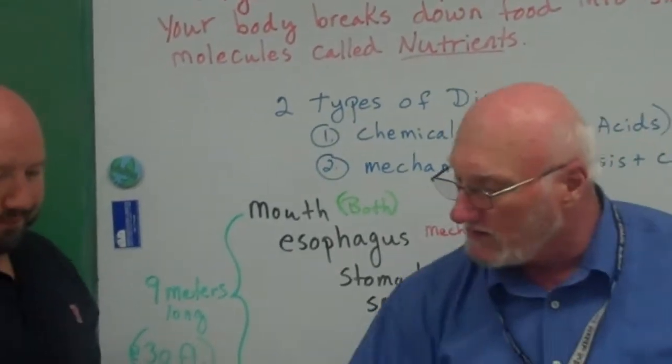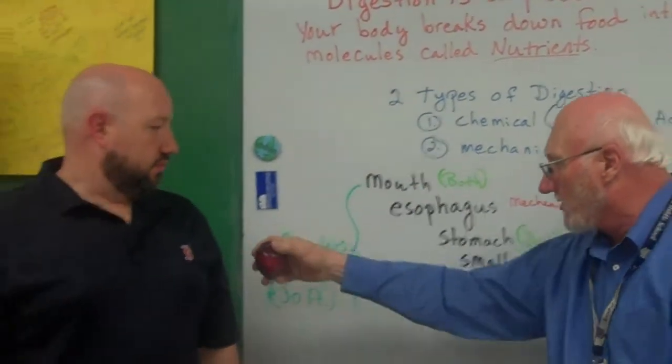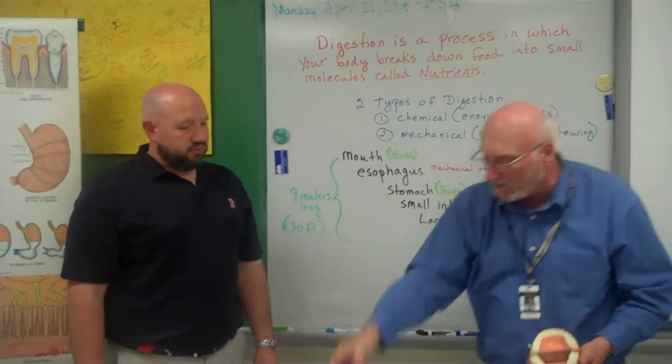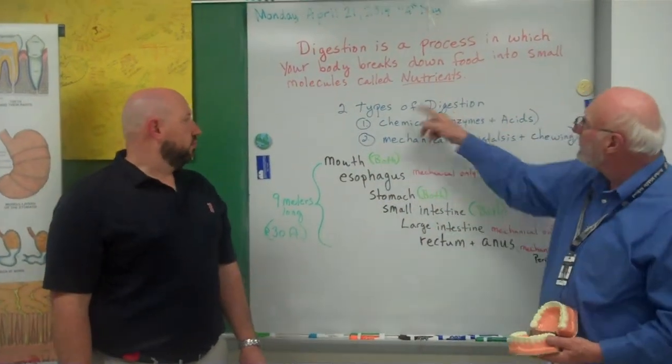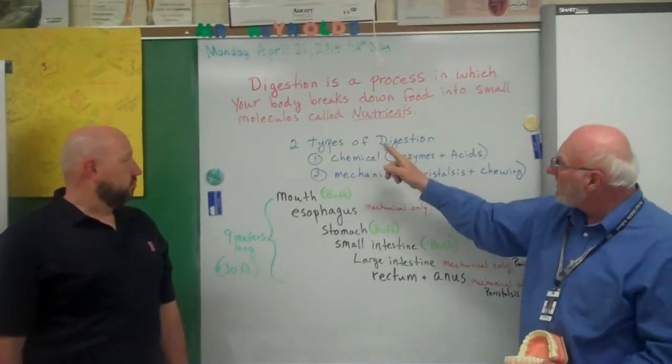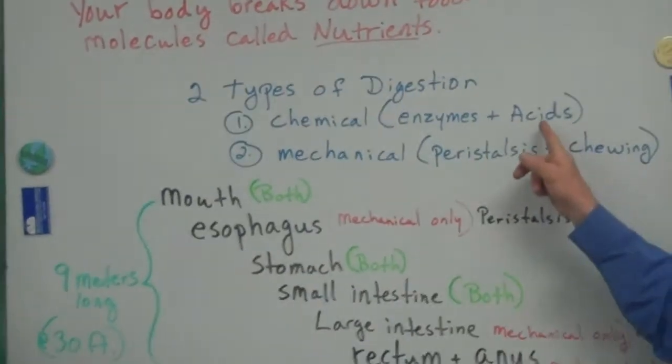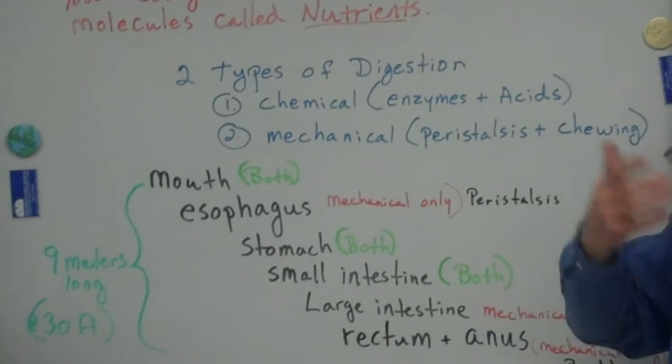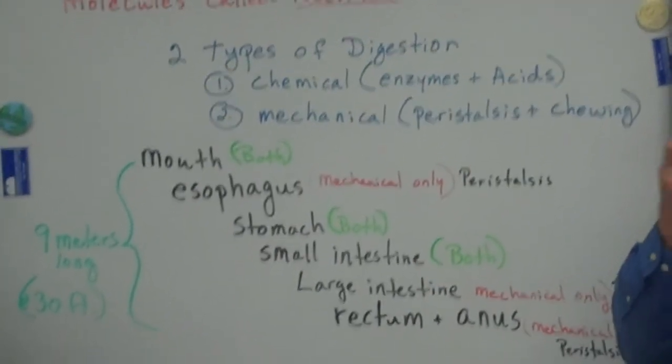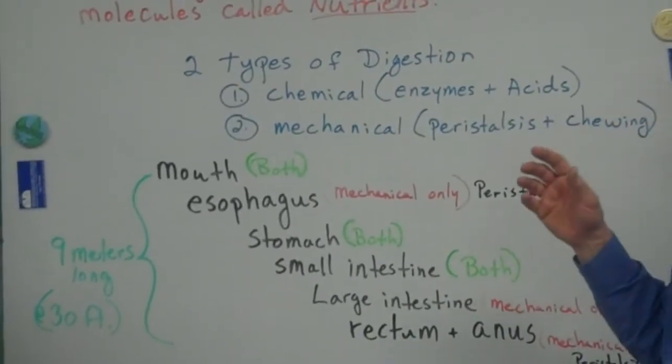Now, your body doesn't want to swallow it and travel like this goes to your arm or this goes to your leg. So it's got to be broken down. And that's why we have two types of digestion. We have chemical digestion, which involves enzymes and acids. You know, if you've ever thrown up, you feel the acids in your nose because it doesn't belong there.